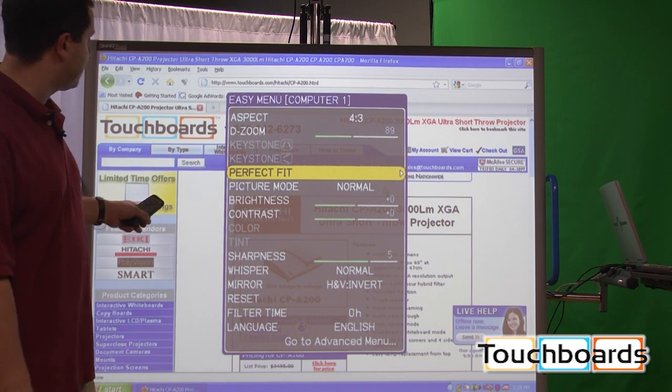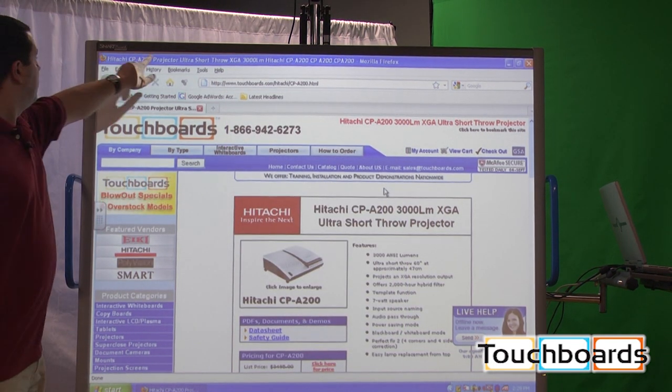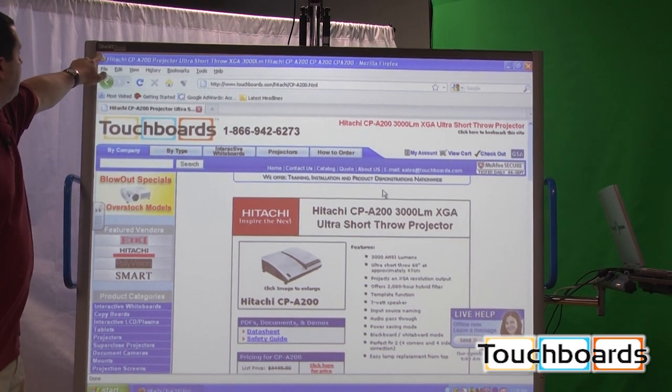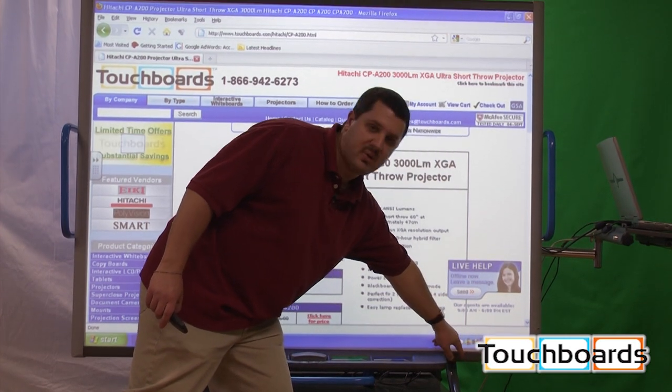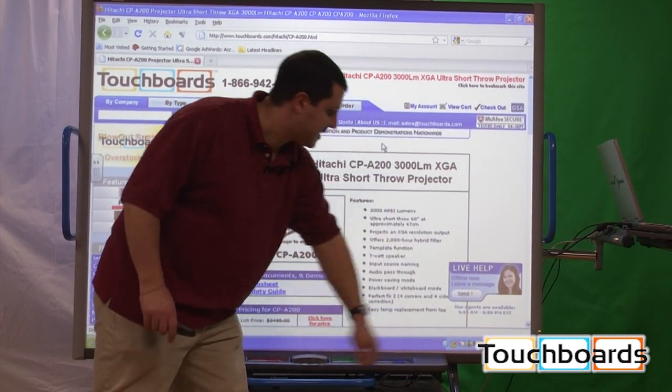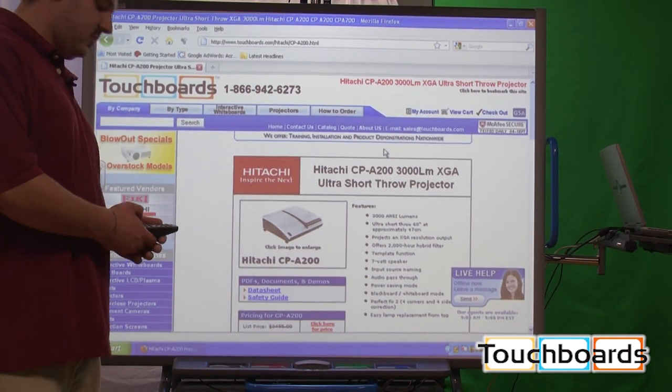And then there's a feature called perfect fit. If you can see here, this part of the board is exposed, it's not being covered by anything, as well as this bottom corner here. There's a little bit of the board that the projector isn't projecting on. Most people might not even notice it. I don't like it, so I want to fix that.